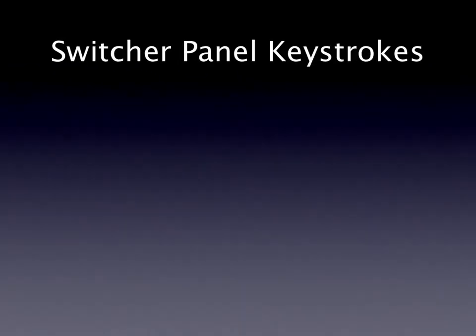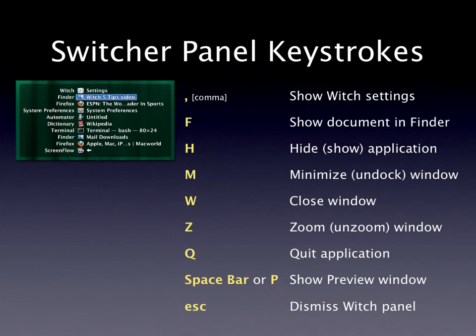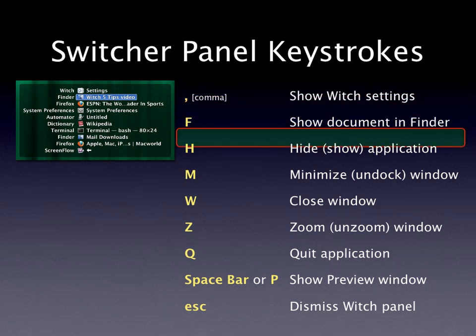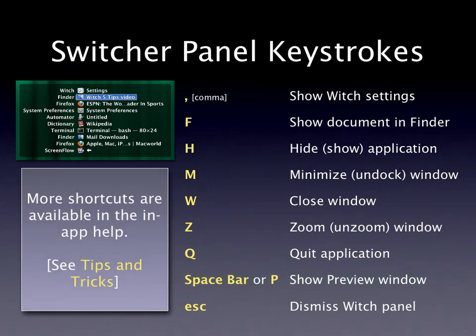The final set of shortcuts in WITCH are panel keystrokes — keystrokes you can use while the WITCH panel is on the screen. If your trigger is Option-Tab, you can press Option-Tab comma to get to the WITCH settings screen — actually the easiest way to get to WITCH's preferences. You can also use H to hide the application, or Z to zoom or unzoom the specified window. Even if you have the preview feature turned off, hitting the space bar or the P key will show a preview window for the selected item. There are a number of other keys listed in help as well.